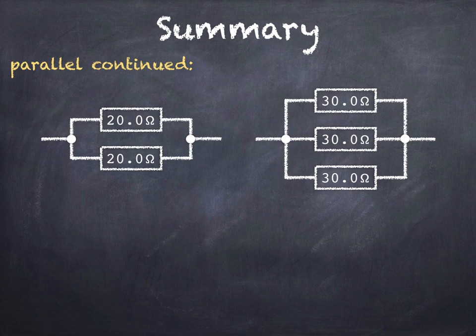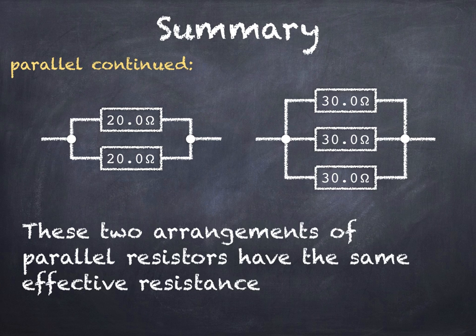Here's a quick tip for when all the resistors in parallel have the same value. If we have two resistors of the same value in parallel then the effective resistance is half of that value. So the effective resistance of the two resistors on the left will be 10 ohms. With three resistors of the same value in parallel the effective resistance is a third of that value. So the effective resistance of the three resistors on the right is also 10 ohms.